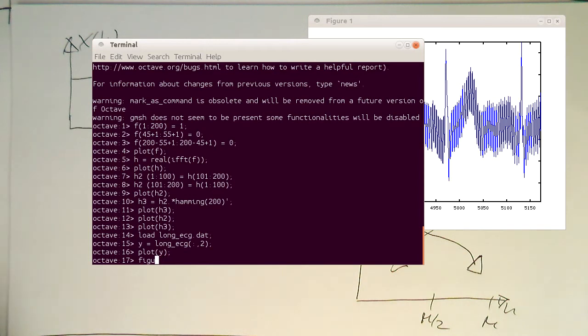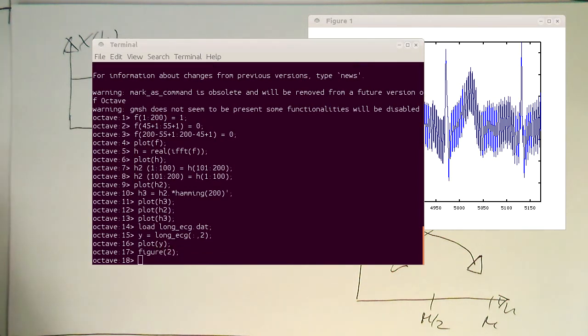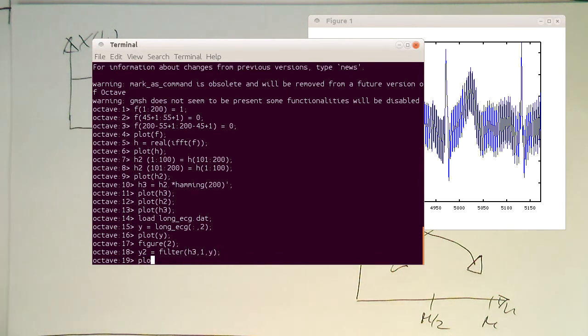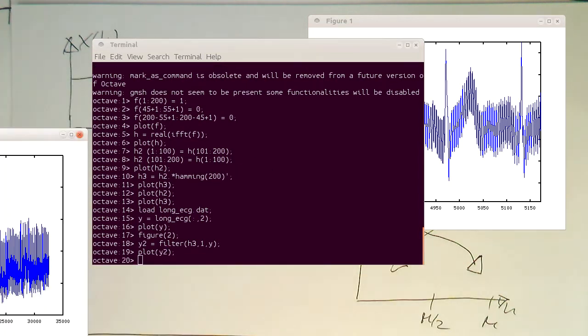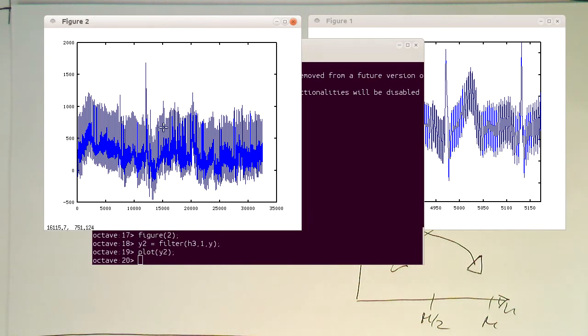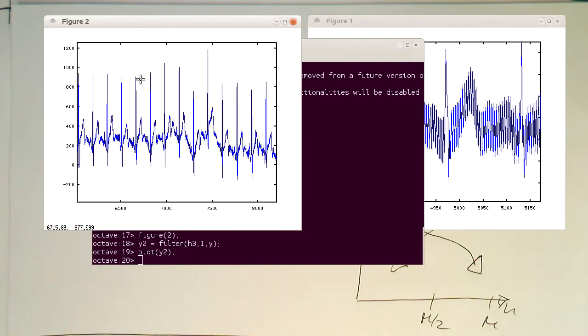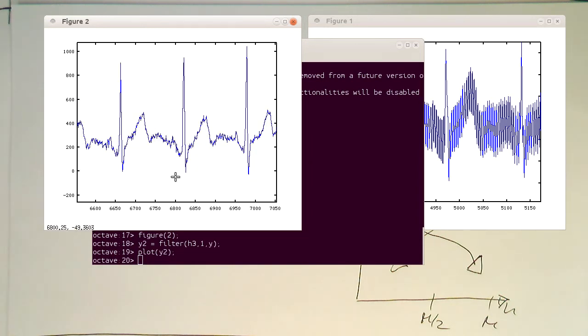Let's create a second figure for this to make it comparable. And so do a y2, and this is then filter. And our coefficient now is called h3, 1 comma y. And let's plot this as well. Okay, so this is our filtered ECG. That's roughly in the region of 5,000 here. Let's see that I'm picking roughly the same area.